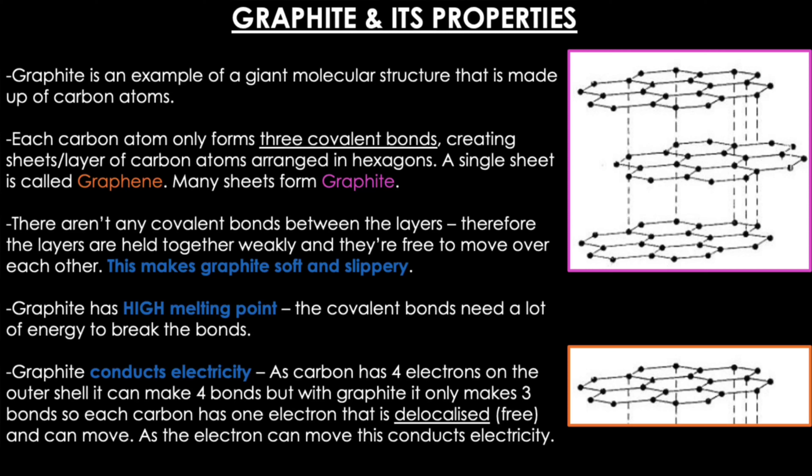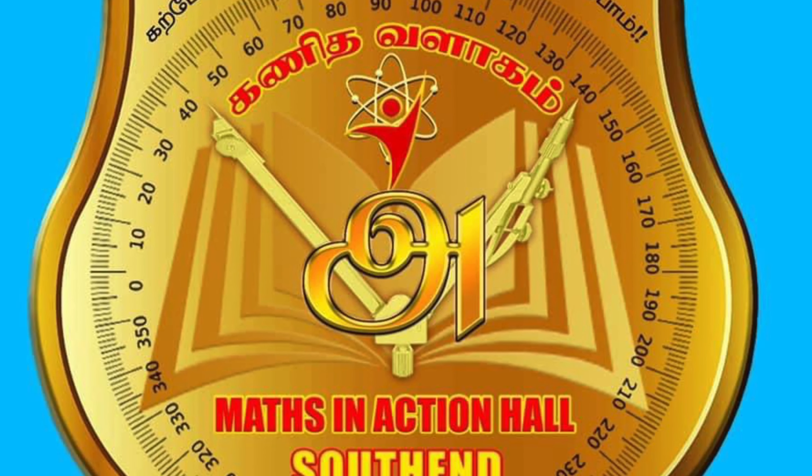Graphite and its properties. Graphite is a giant molecular structure made up of carbon atoms. Each carbon atom forms only three covalent bonds, creating sheets of carbon atoms arranged in hexagons. A single sheet is called graphene, and many of these sheets form graphite. There are no covalent bonds between the layers, so the layers are held together weakly and are free to move over each other, making graphite soft and slippery. Graphite has a high melting point as the covalent bonds need a lot of energy to break. Graphite conducts electricity because carbon has four outer electrons but only makes three bonds, leaving one delocalized electron per carbon that is free to move. Graphene, as a single layer of graphite with strong covalent bonds, is strong, has a higher melting point, and can also conduct electricity.